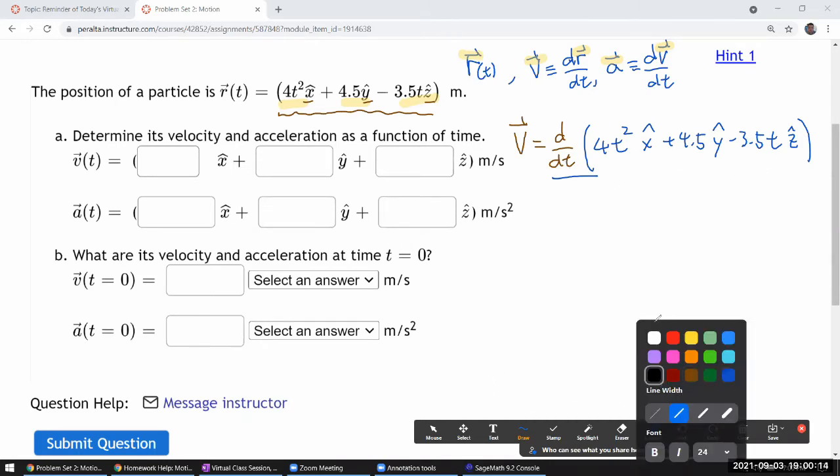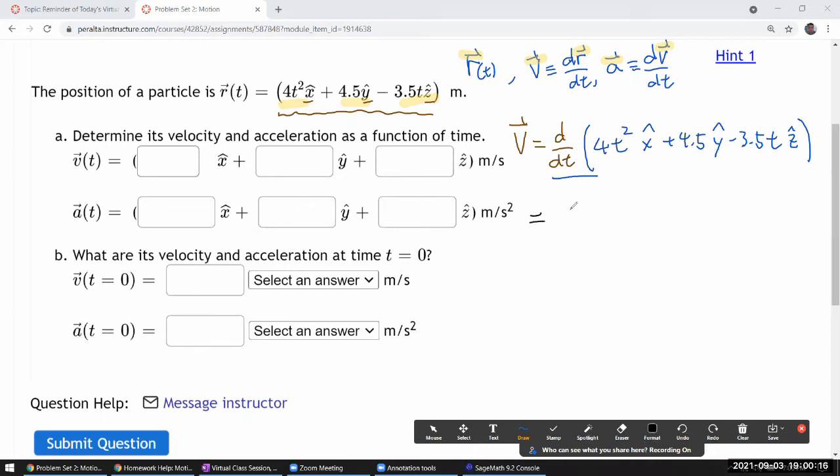So this becomes the time derivative of 4t squared x hat plus the time derivative of 4.5 y hat minus the time derivative of 3.5, I moved the minus, it's fine, t z hat.